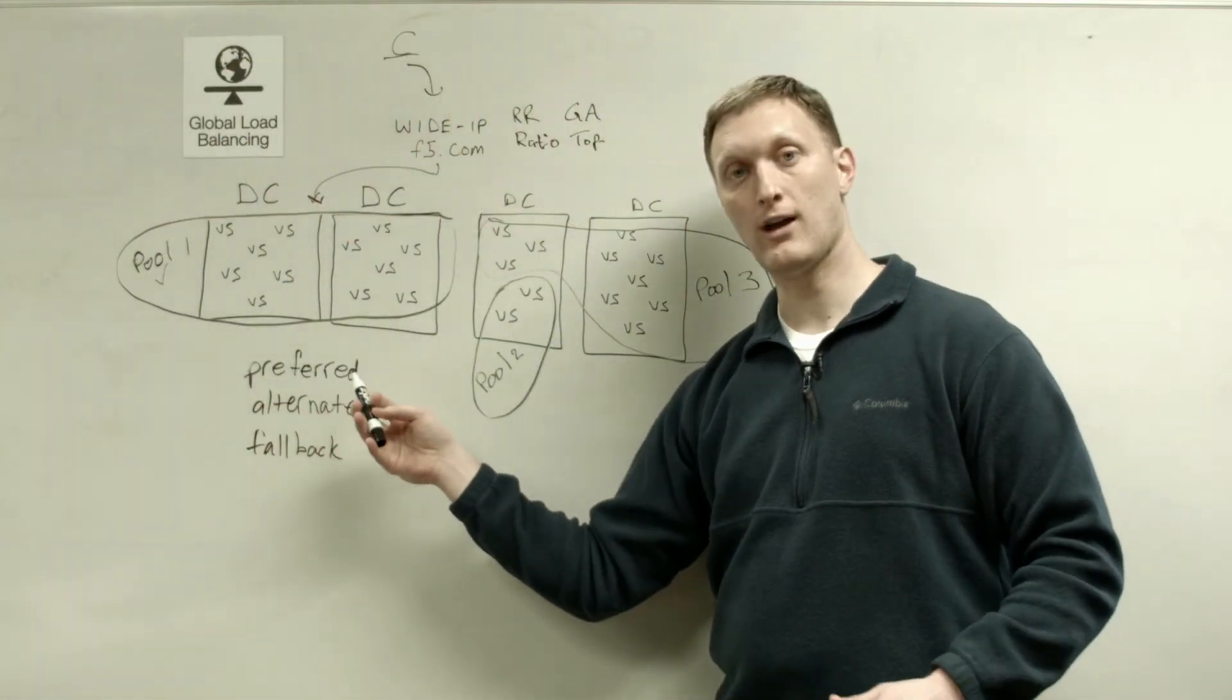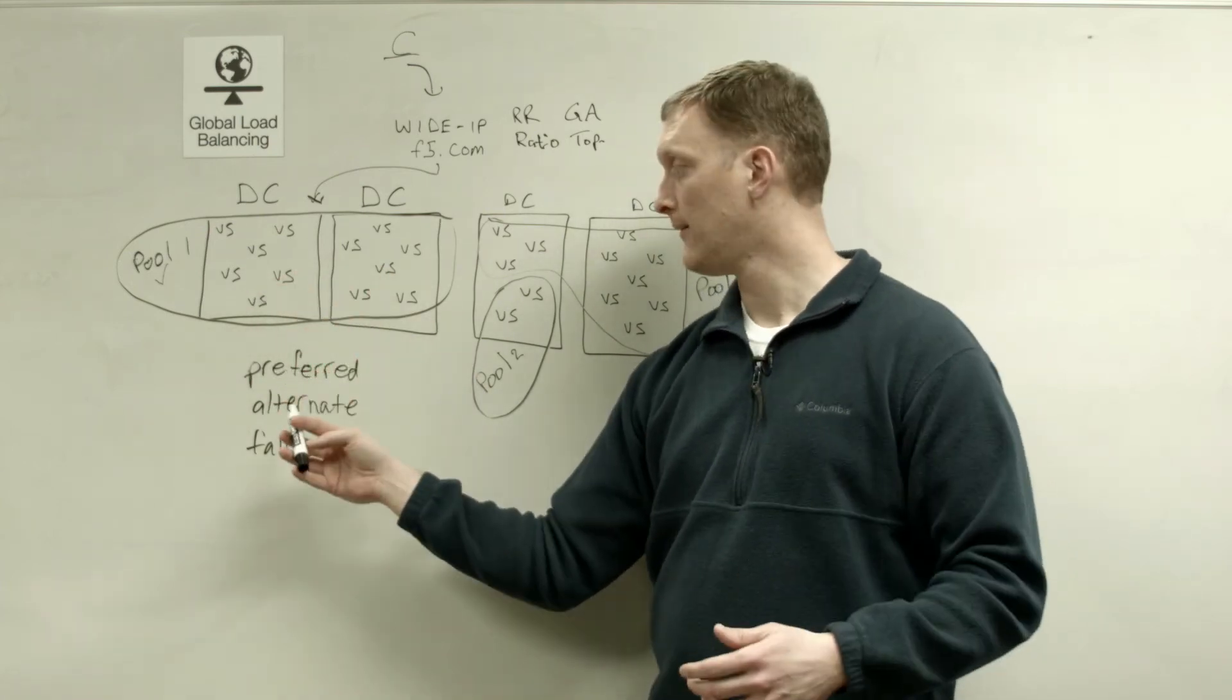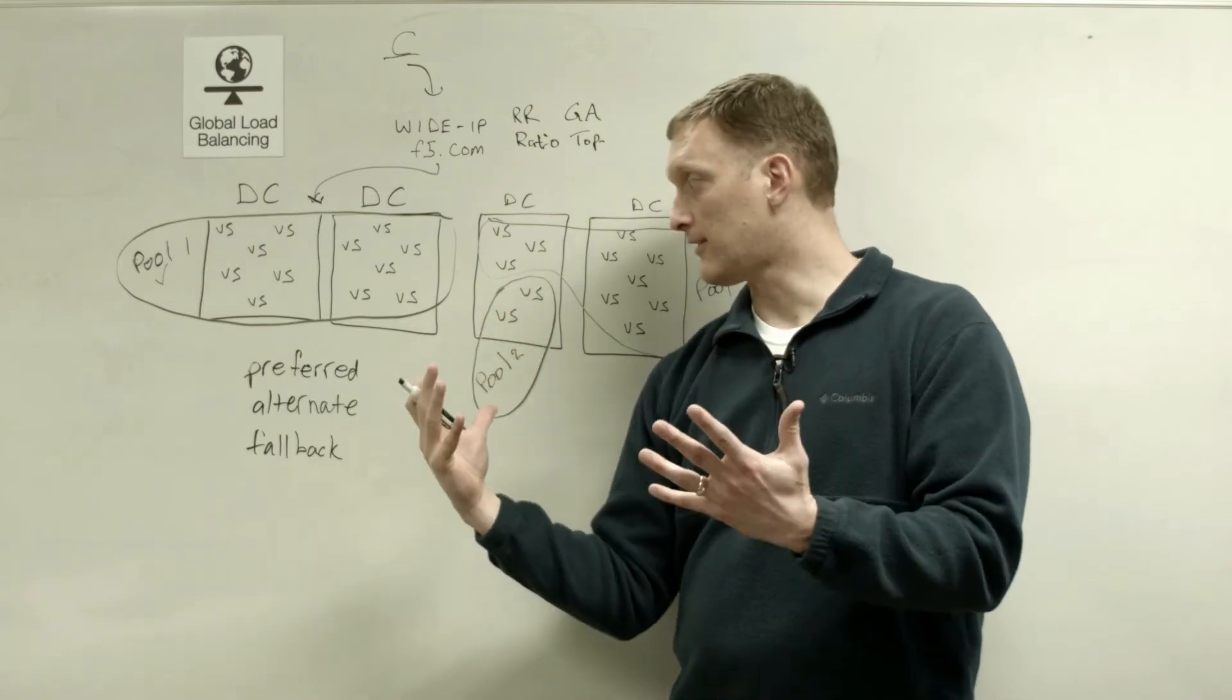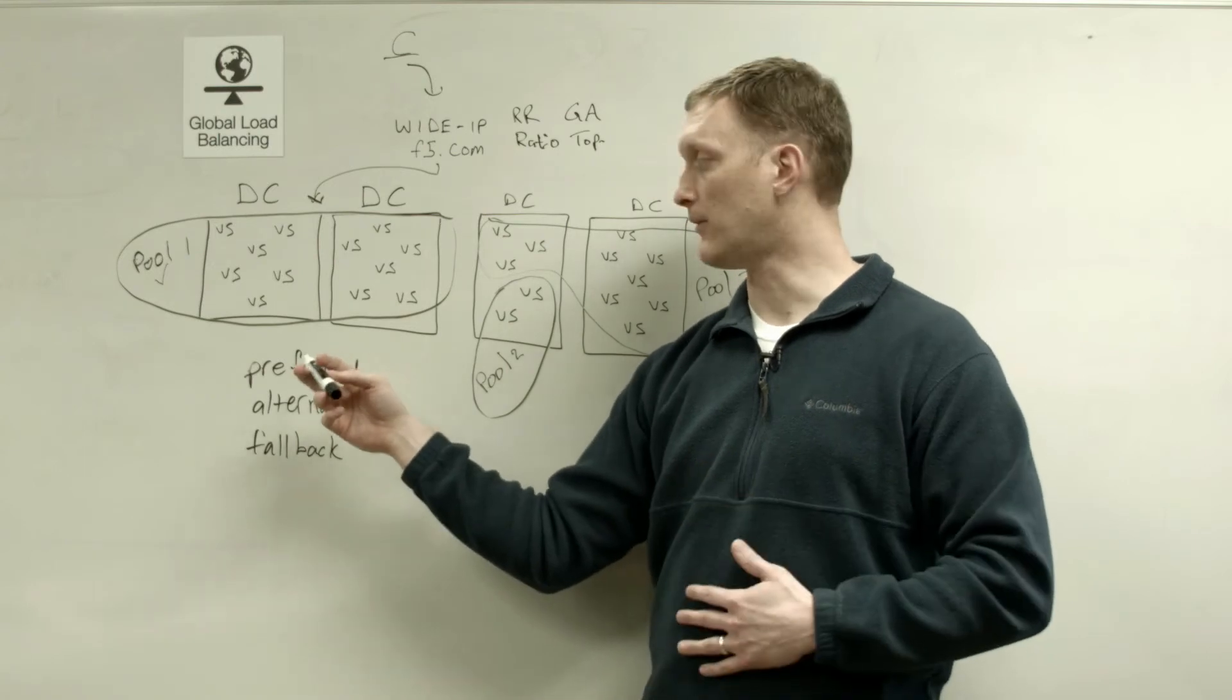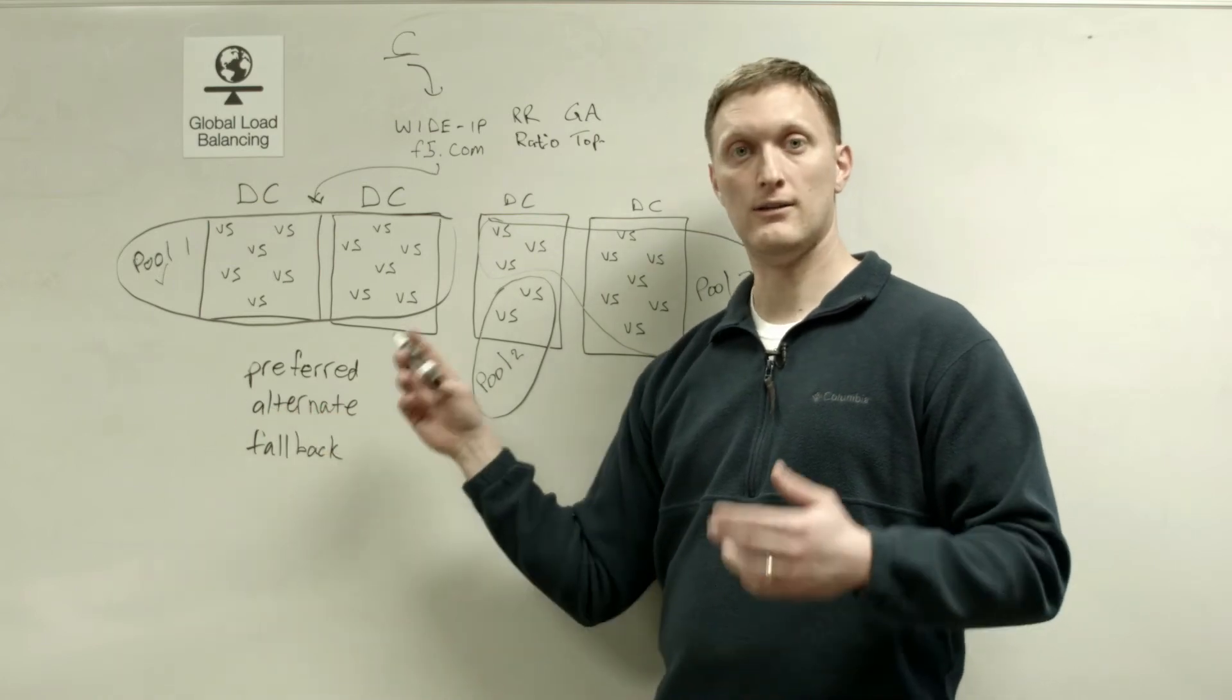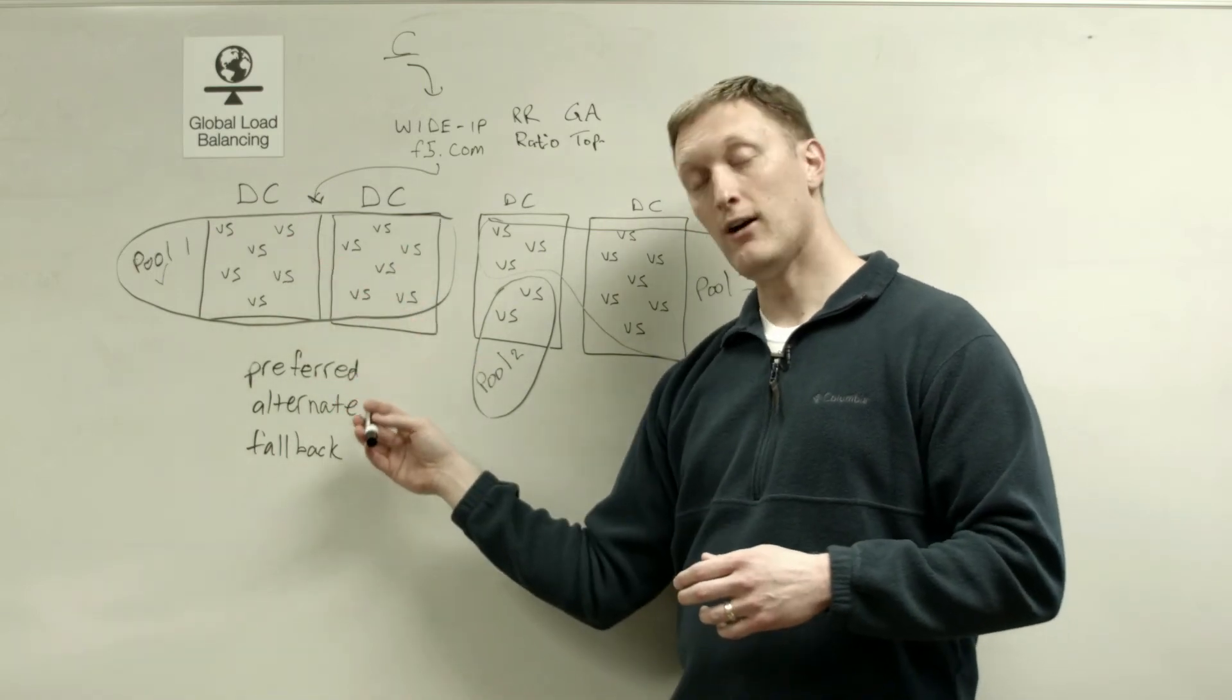And so you can imagine the preferred option of selecting the virtual server is going to be the one that you really want to have happen. If that one is not available, whether there are statistics involved, and maybe the statistics are not available at that point, or for whatever reason, if the preferred option is just not available at that point, then you come down to the alternate option. And you can identify an alternate load balancing option, again, within the pool to figure out which virtual server you want.